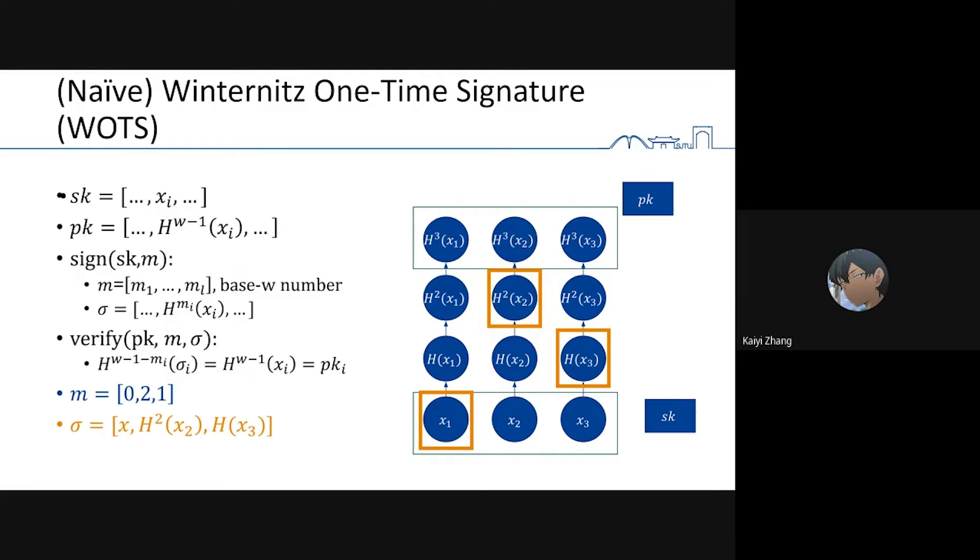First, the signer generates random numbers denoted by X. They are the secret key. And hash them repeatedly W minus one times to get the public key. To sign a message, the signer first decomposes the message in base W and releases corresponding hash values. To verify a message, the verifier hashes the signature to the public key. For example, if I want to sign a message 0, 2, 1, I will release those three X.